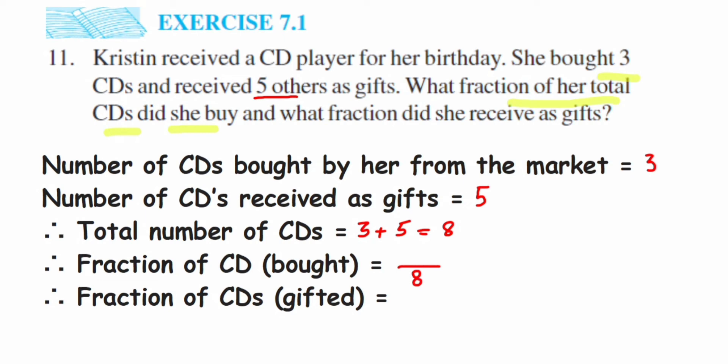And out of this 8, how many she bought? She bought only 3. So the fraction will become 3 by 8. We know that fraction is nothing but part of a whole thing. So whole thing here is 8 and she bought 3 from the market.